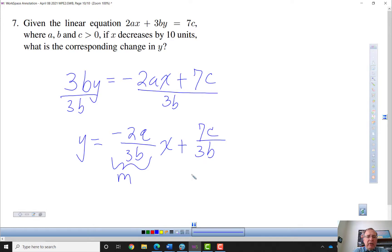And here's the way I think about it. If my delta X is negative 10, negative 2A over 3B times negative 10. The negative times negative is positive, so that's 20A over 3B.